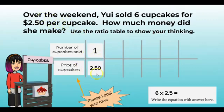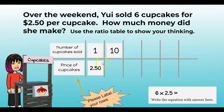The problem says four cupcakes cost two dollars fifty cents. We want to get to six, so we could jump to two and then four and just double and double — that would be super easy — but we've been working with powers of ten. So I'm going to jump to ten. When we multiply anything by ten, we push it up a place value: our two becomes twenty, and our fifty cents becomes five dollars, giving us twenty-five dollars.